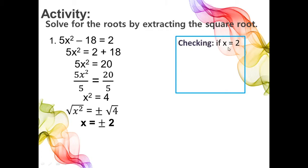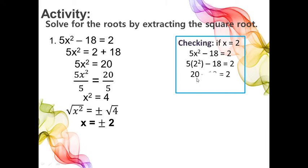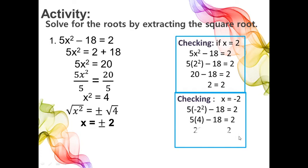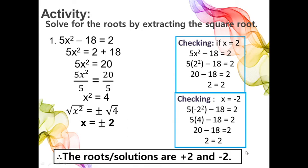For checking, if x equals 2, using the original equation: 5 times 2 squared minus 18 equals 2. That is 5 times 4, which is 20, minus 18 equals 2. So 2 equals 2. For x equals negative 2: negative 2 squared is 4 times 5, giving 20 minus 18 equals 2. So 2 equals 2. Therefore, the roots or solutions are positive 2 and negative 2.